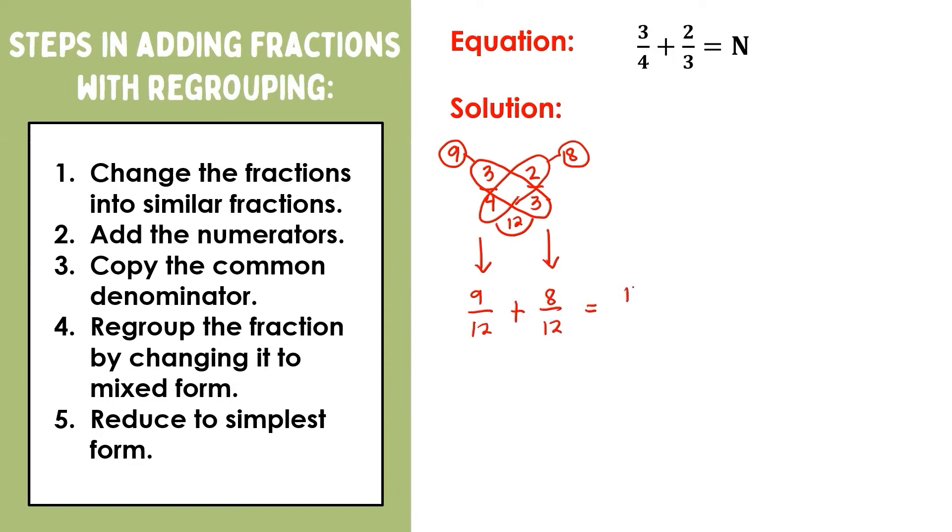Nine plus eight is seventeen. Then we copy the common denominator which is twelve. Seventeen-twelfths is an improper fraction, so we have to regroup. Seventeen divided by twelve is one. One times twelve is twelve. Seventeen minus twelve is five. Therefore, we have one and five-twelfths. Five and twelve have no common factor other than one, so our answer is already in its simplest form.